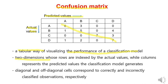In this case, when we have four classes A, B, C, and D, the table shows how well the model predicts each class. For example, it predicts A eight times, out of which six are correct, one is predicted as B, and one is predicted as D.